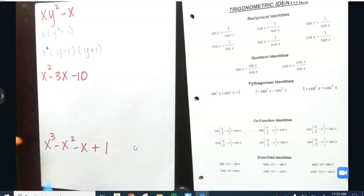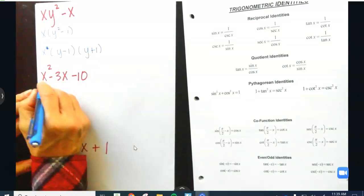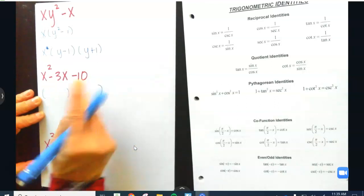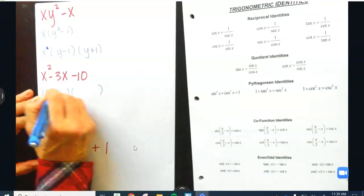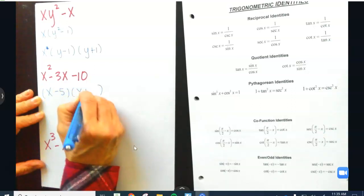Right here if you notice this is factorable because there are factors of negative 10 to add to a negative 3. That is going to be X minus 5 and then X plus 2.